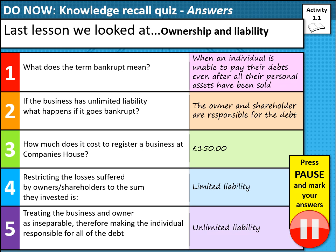Restricting the losses suffered by owners and shareholders to the sum they've invested is called limited liability, which we discussed last time. Treating the business and the owner as inseparable, therefore making the individual responsible for the debt, is unlimited liability. I must stress unlimited liability — if you can avoid it, I would. But we are going to look at a sole trader today.